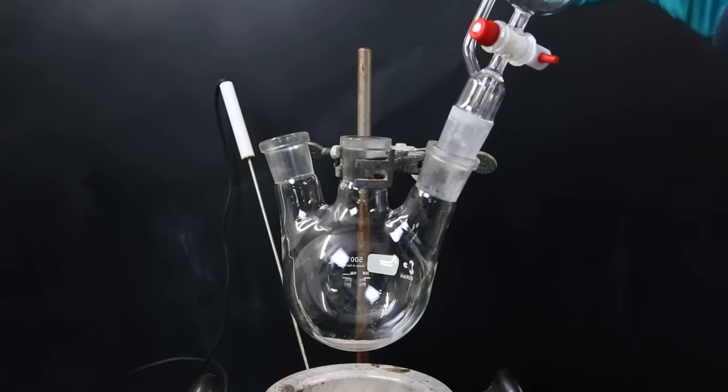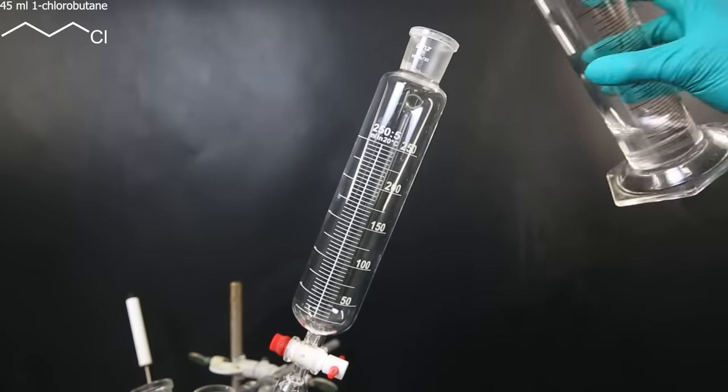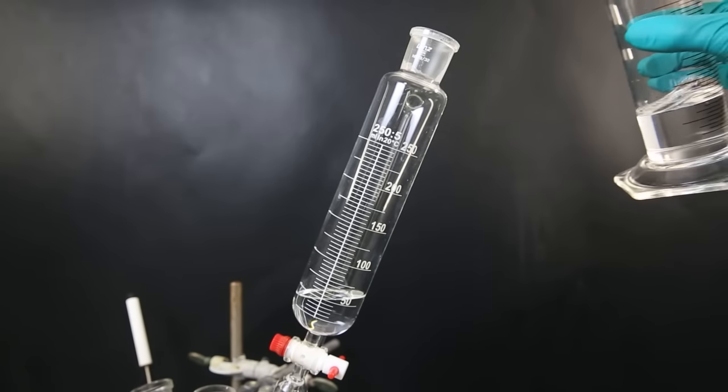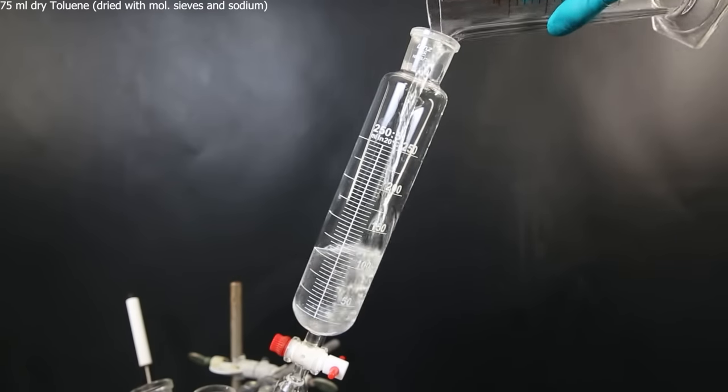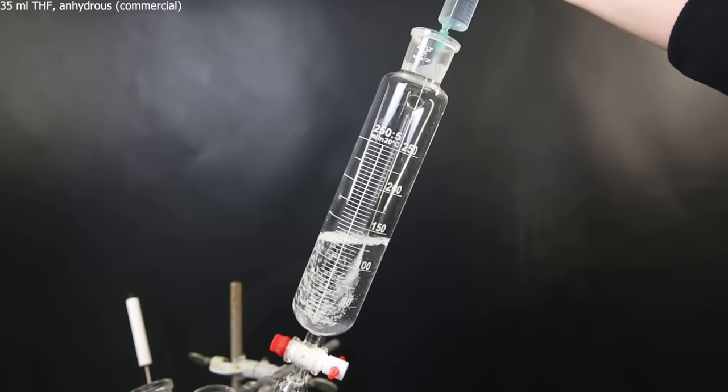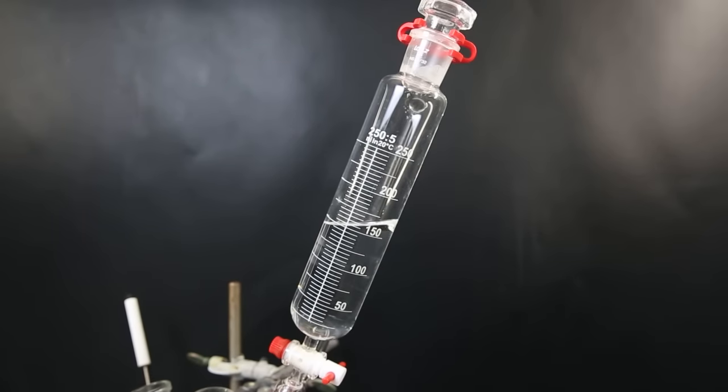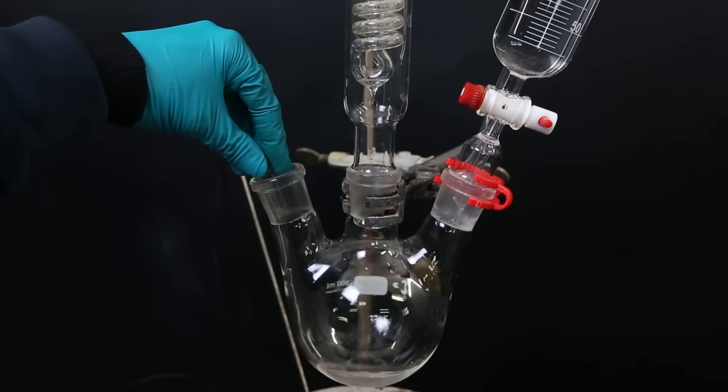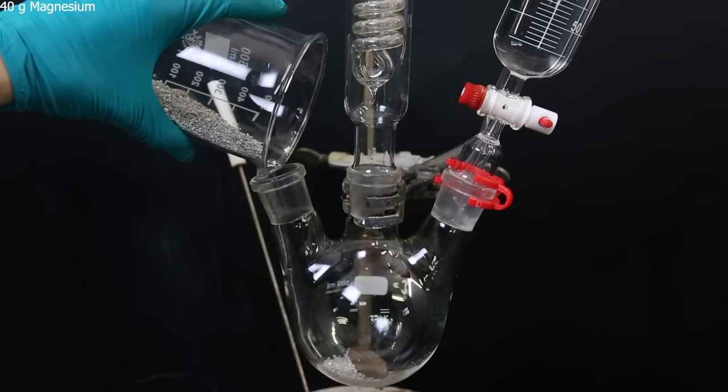So I set up a 3-neck flask and attach a dropping funnel. Now to the dropping funnel, I first add 45 ml of 1-chlorobutane. Then I add 75 ml of dry toluene and 35 ml of anhydrous THF. Now I attach a condenser to the flask, drop in a stir bar, and then add 40 grams of magnesium turnings.